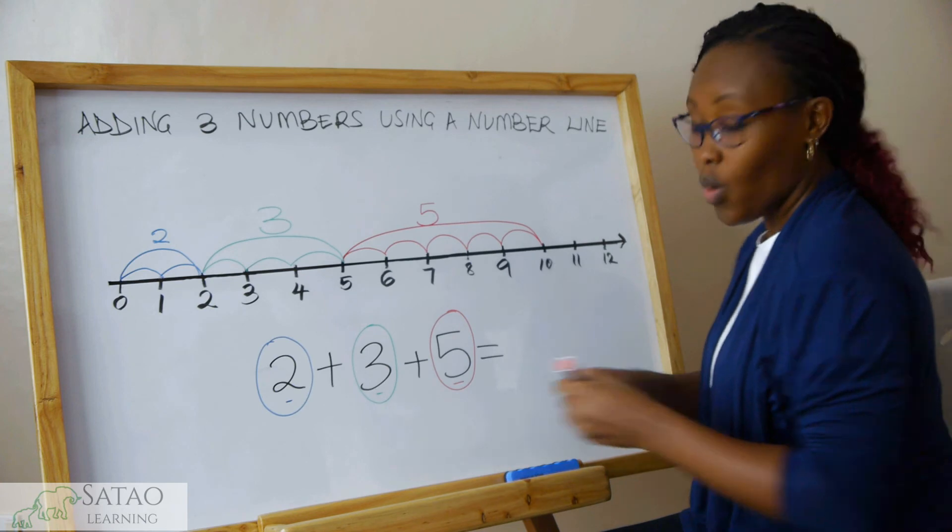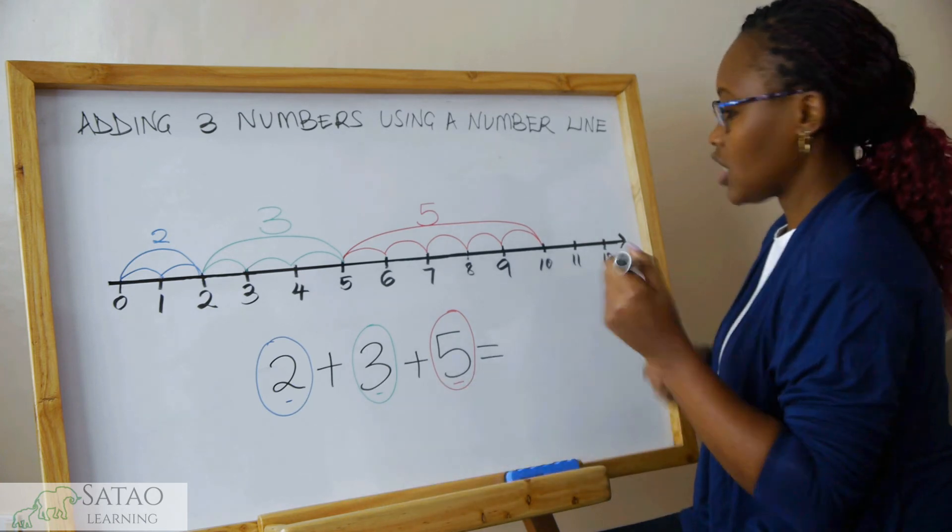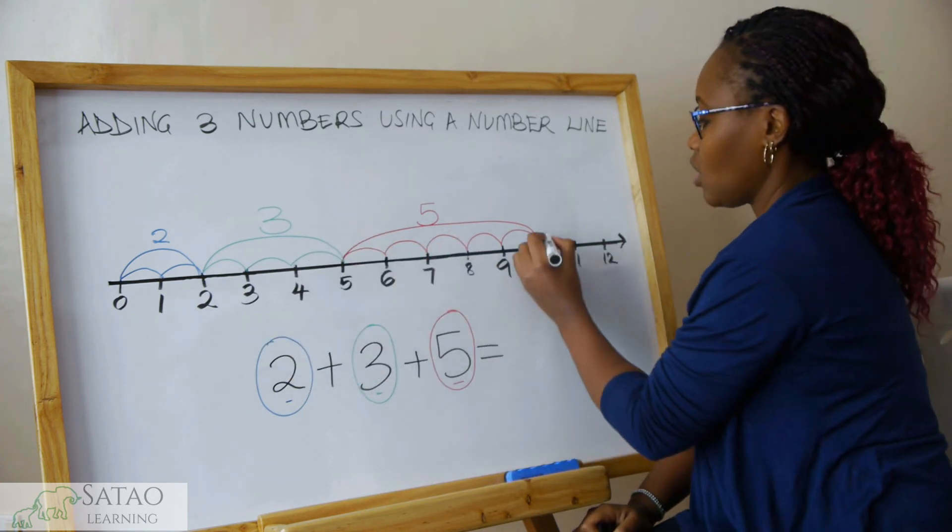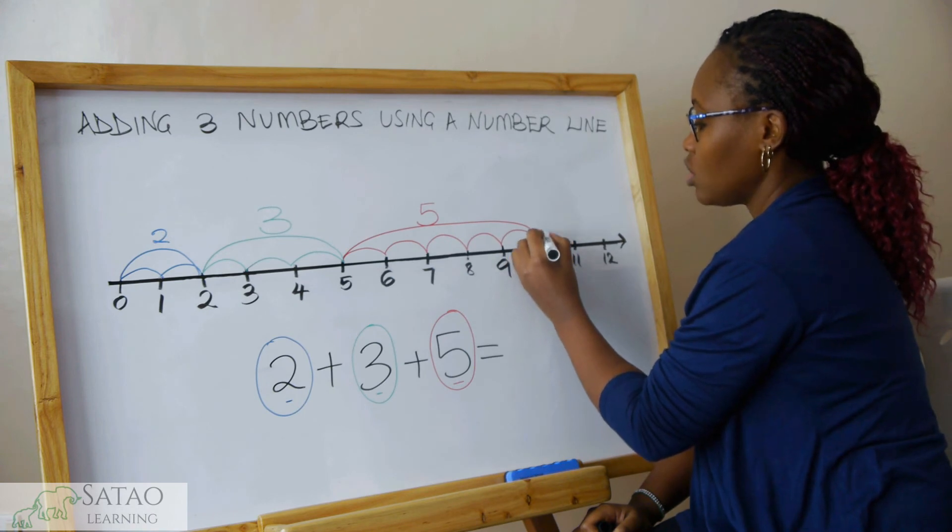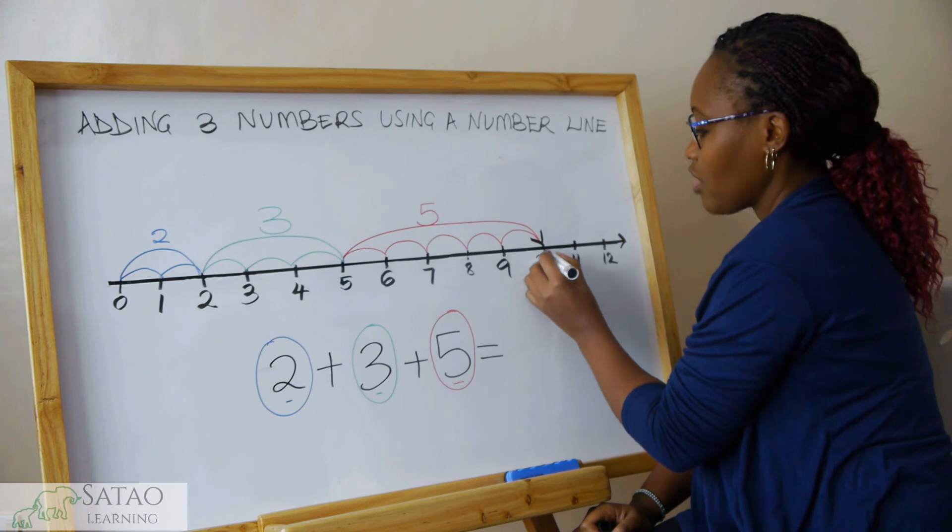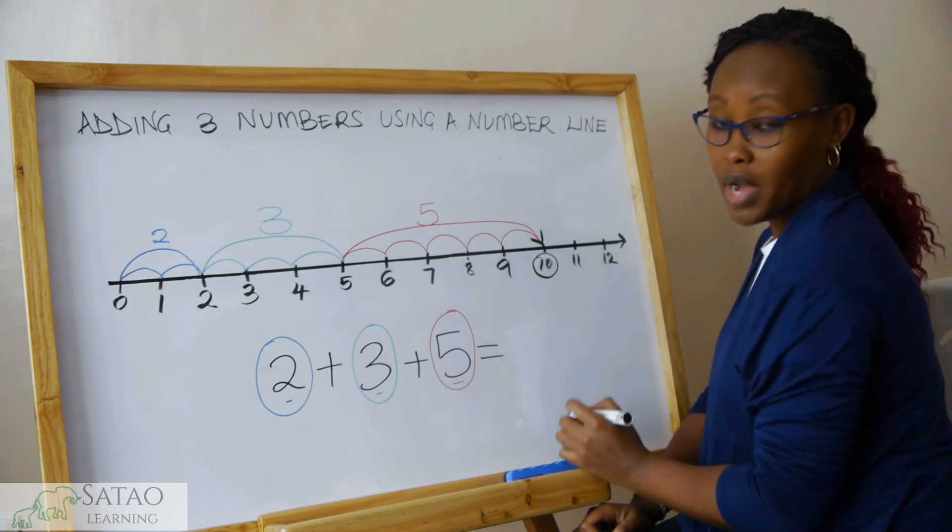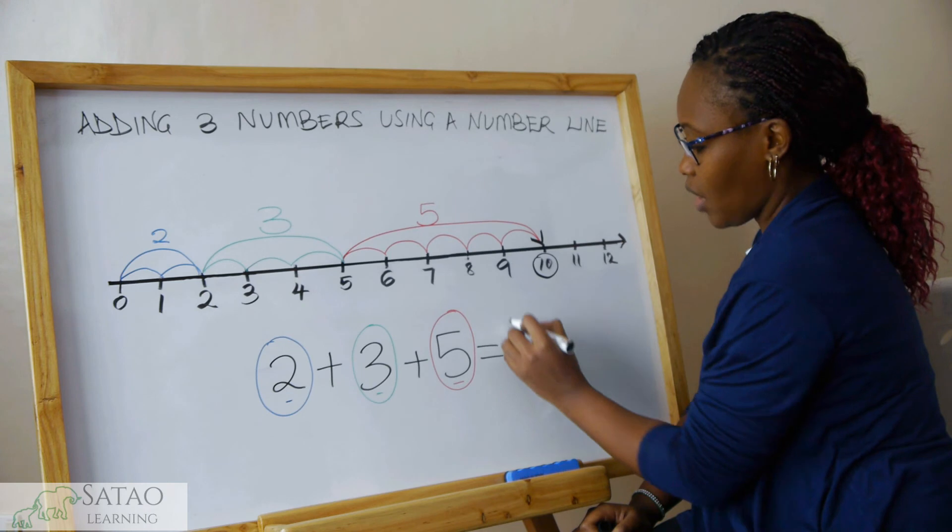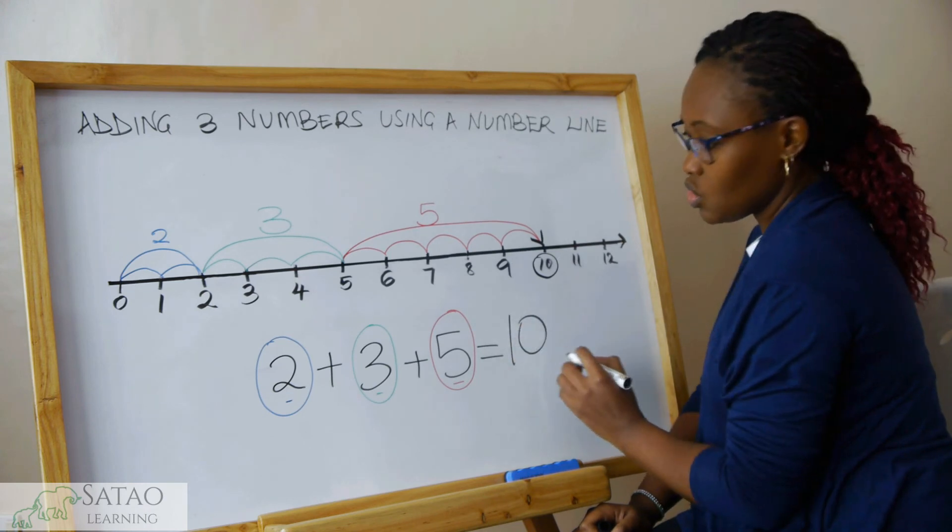Where we reach after skipping with all the numbers, we draw an arrow to show which direction we are going. Then we circle the number that we get there. In this case, our number is 10.